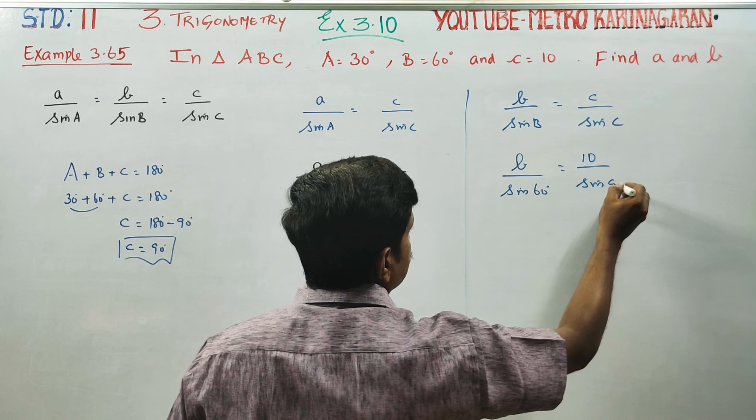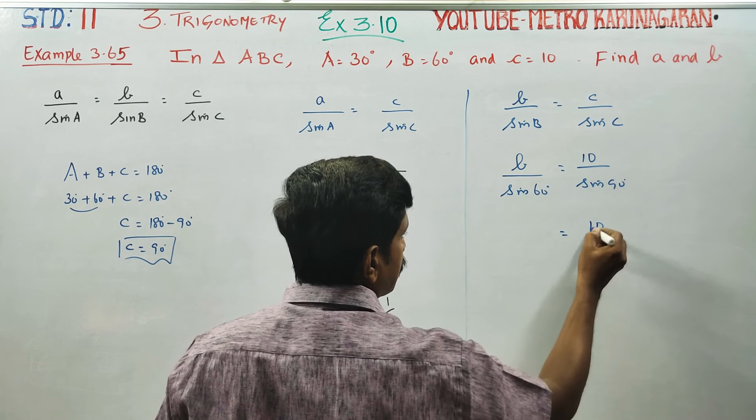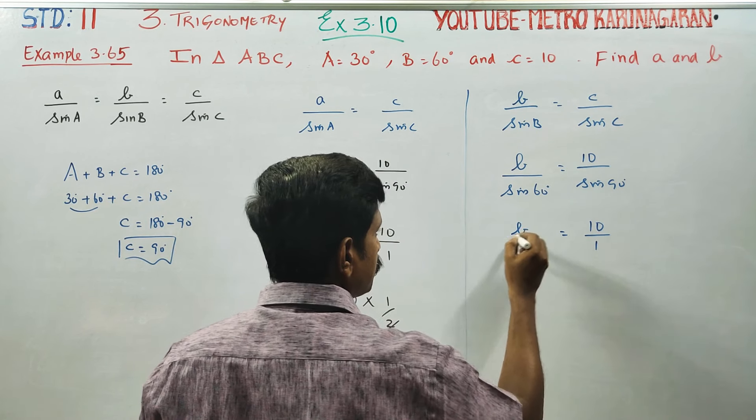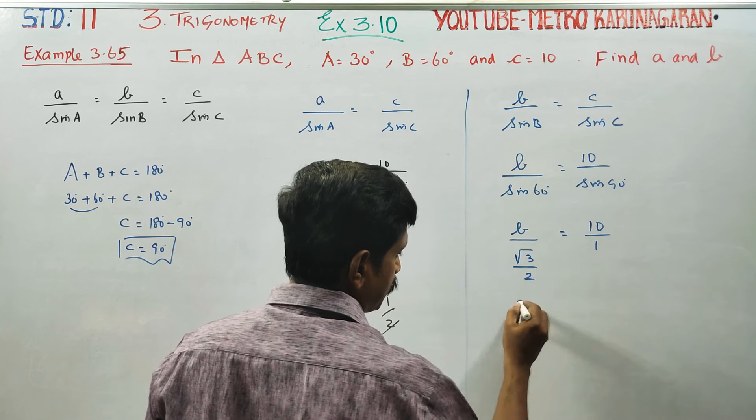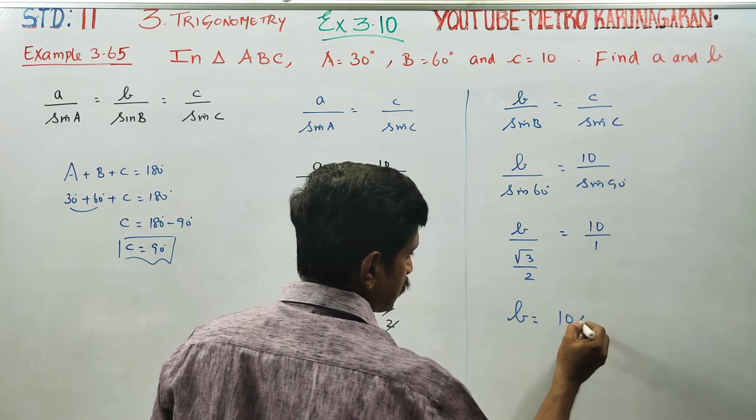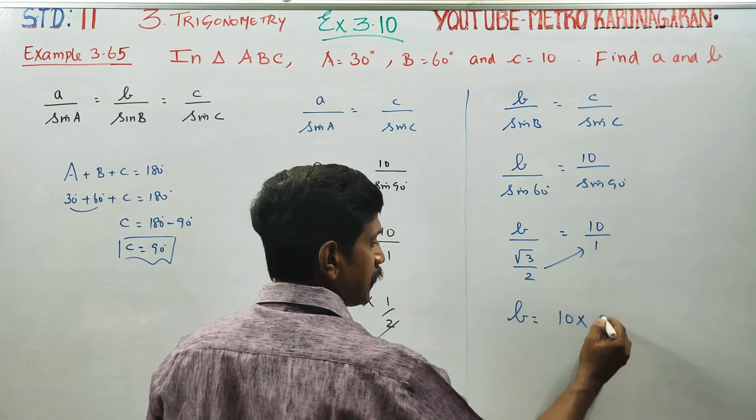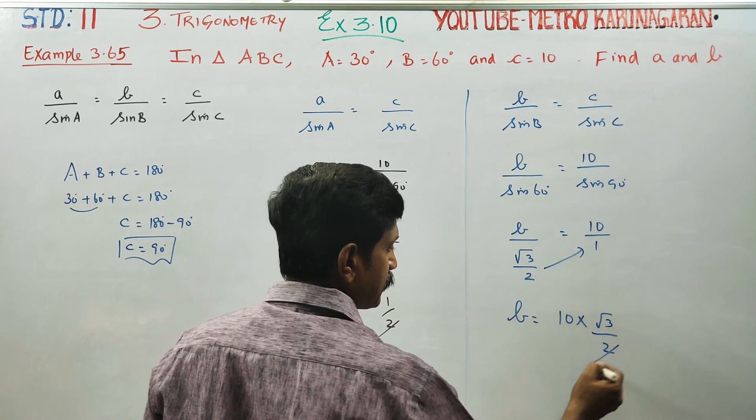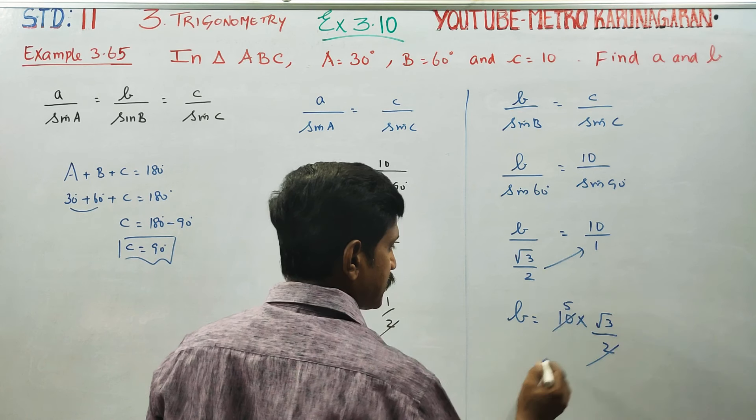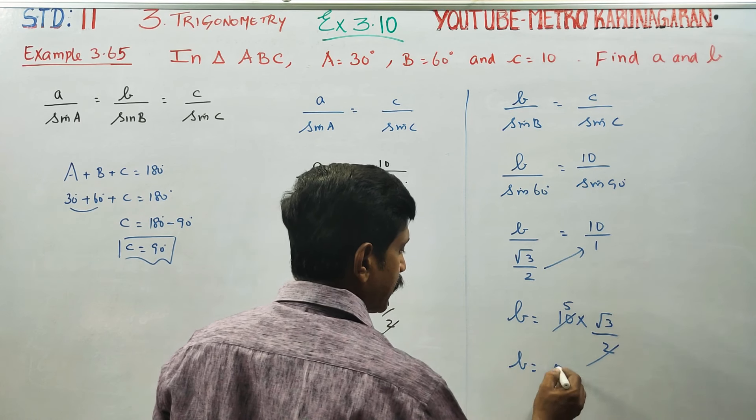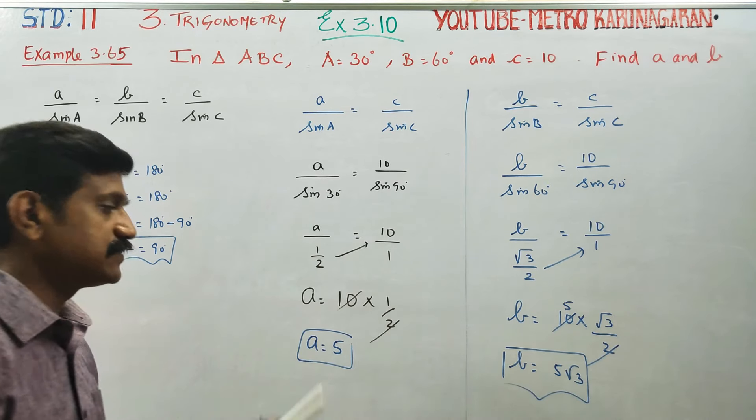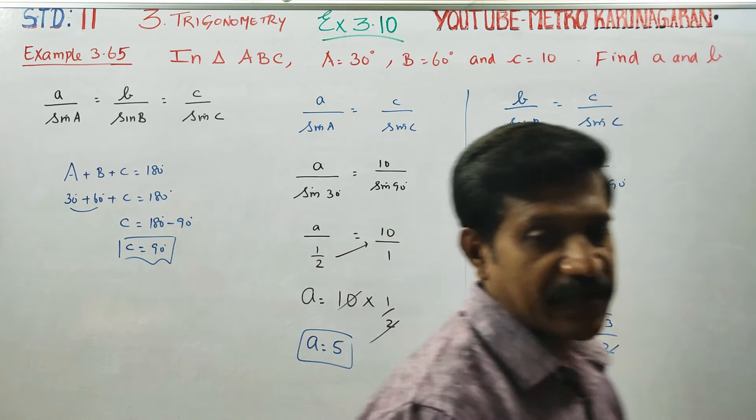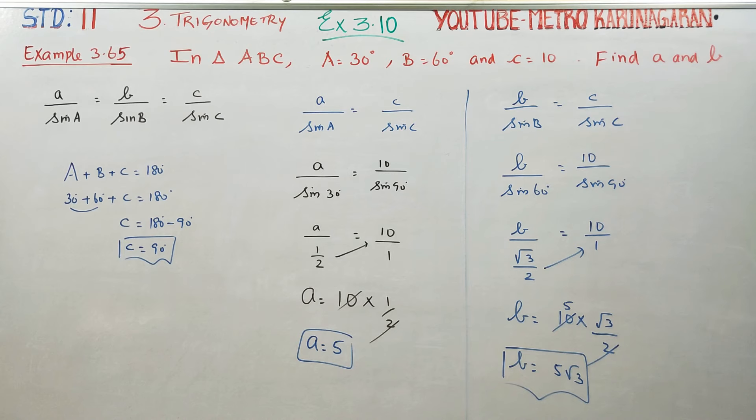Angle C is 90°. What is sin 90°? It's 1. What is sin 60°? Root 3 by 2. So b = 10 × (√3/2). This is my value of b, and this is my value of a. Using the sine formula, we can easily find the values of sides a and b. Thank you.